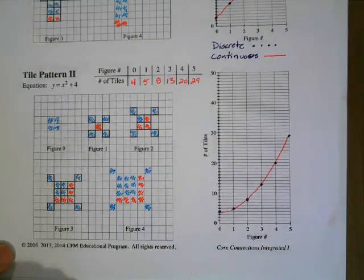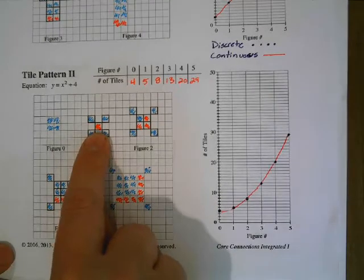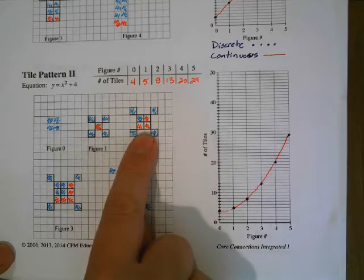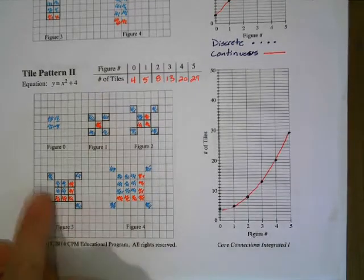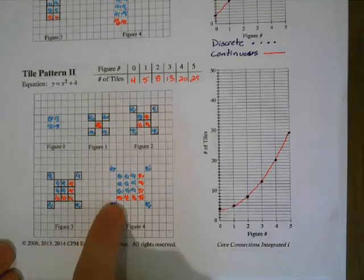Now if you look at it, the figure number is equal to the square in the center. So like the figure two, it's a two by two square in the center. Figure three would be a three by three square in the center. Figure four, I made it into a four by four square.